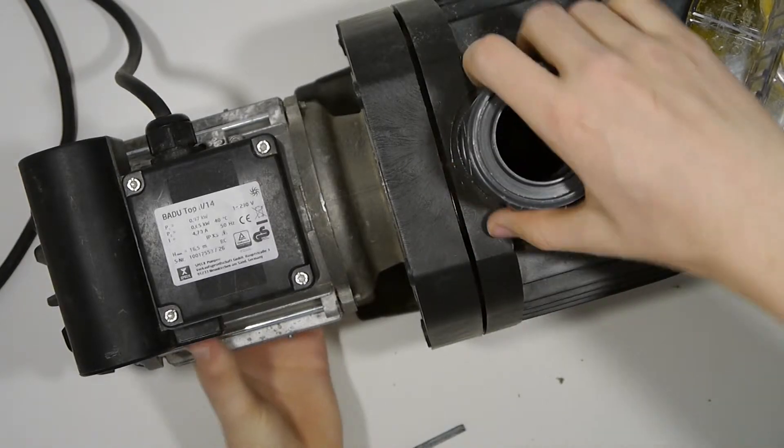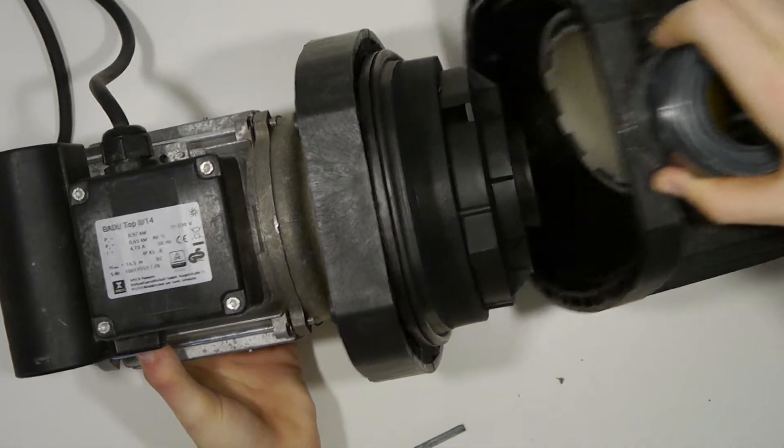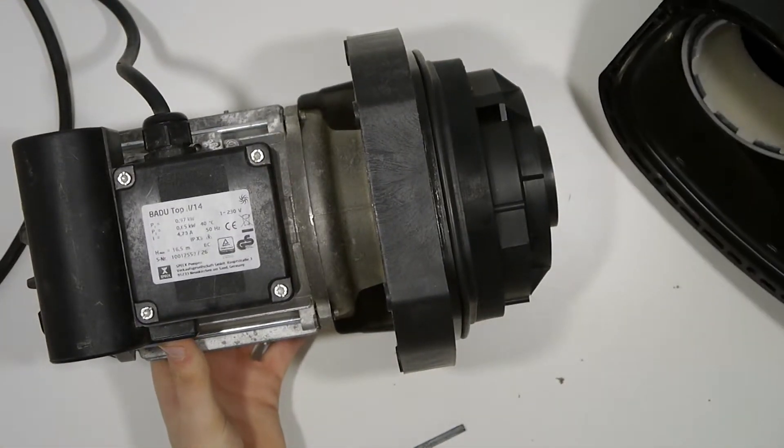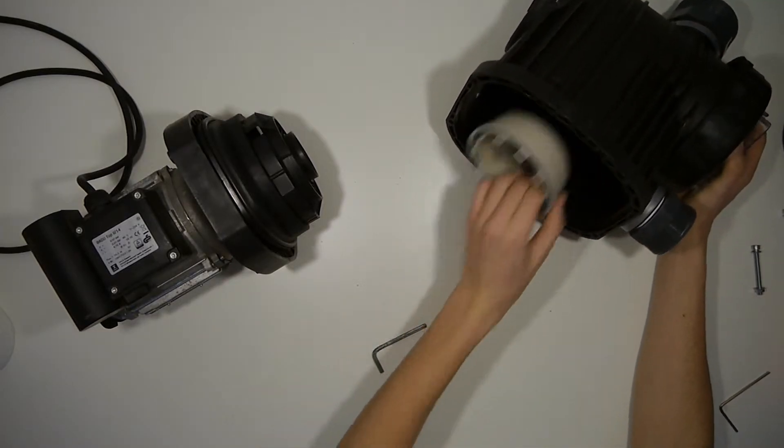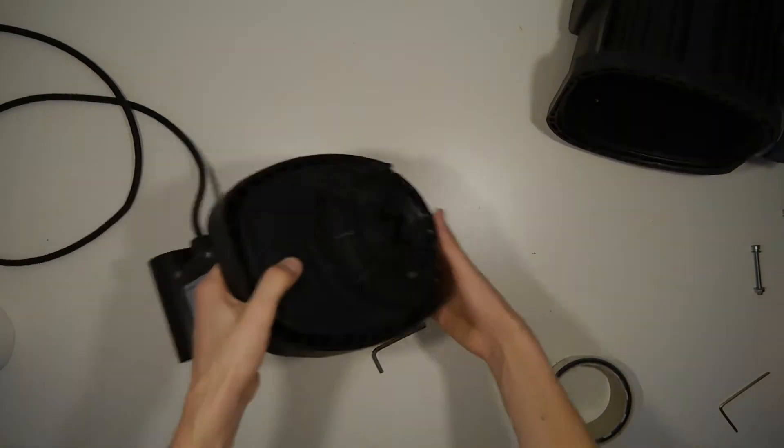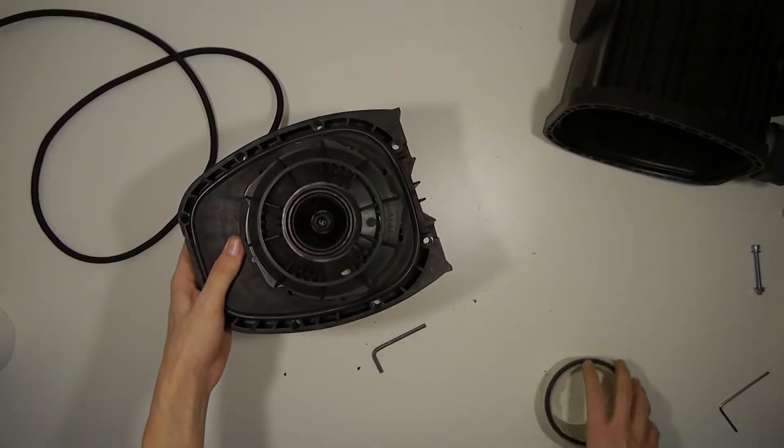Then it is possible to separate both parts and remove the black plastic ring that makes the motor keep the water inside. Then we can remove the two plastic rings that are there to keep the incoming water going to the pump.